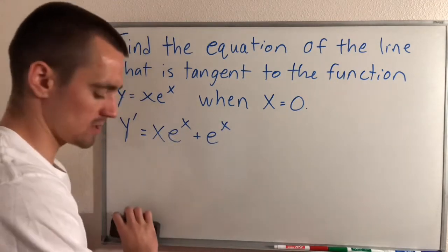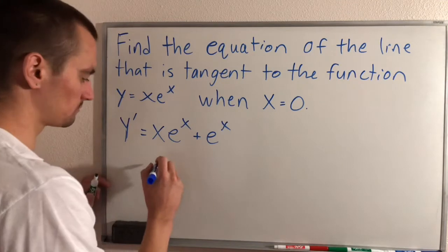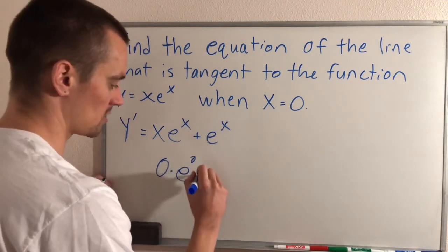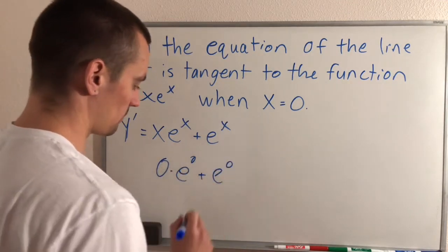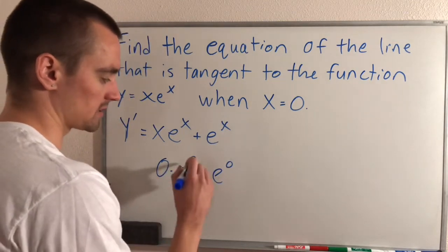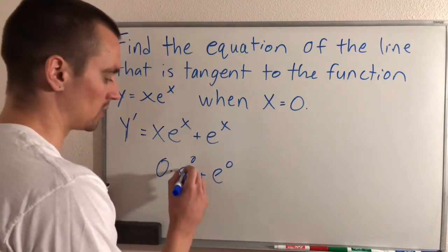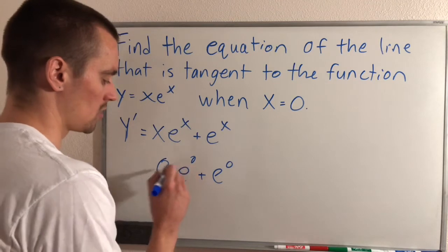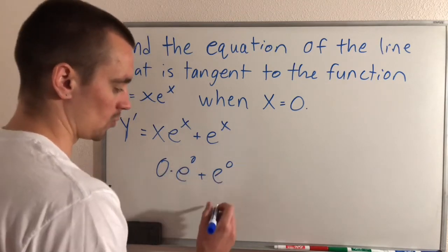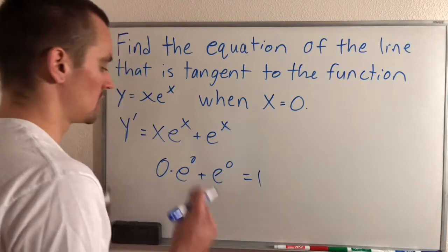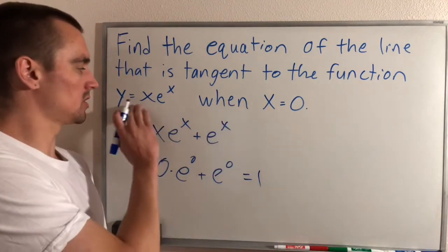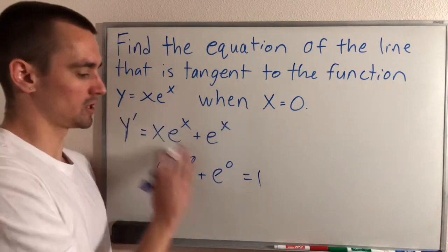Doing that gives us 0 times e to the 0, plus e to the 0. E to the 0 is 1, so 0 times 1 is 0, and zero plus 1 is just 1. So we know when x equals 0, the slope of our function is 1.